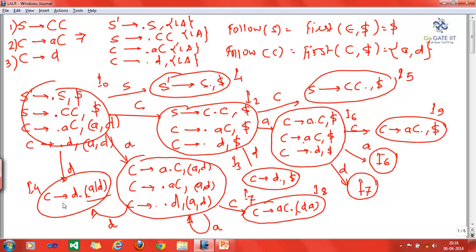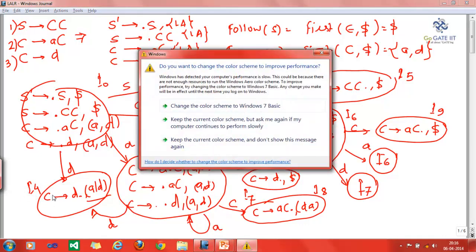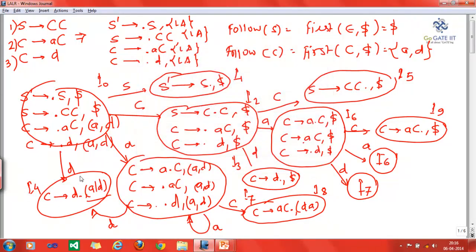We will merge those states which have the same LR 1 items but with different look-ahead symbols. For example, we have I4 here, and we'll find the same production of the same LR 1 item in the rest of the states.